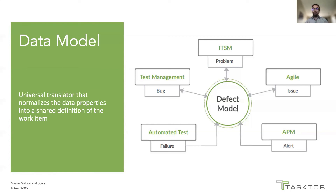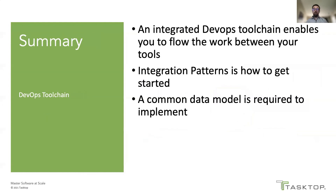These tools may have different fields. What the model does, for example, is it takes the defect name from the source name field in the ITSM tool, and populates that name data value to perhaps the summary field on the corresponding issue in the Agile tool, and furthermore to the ID field on the bug in the test management tool. This normalization and standardization at the field attribute or property level is what the data model handles, and this also sets us up to synchronize even relationships amongst these work items, ultimately capturing the traceability that we want.